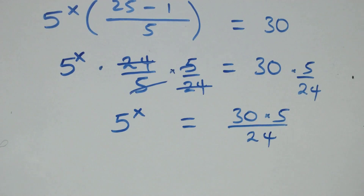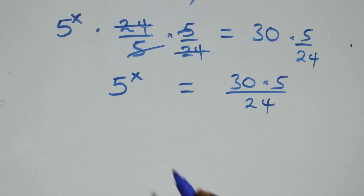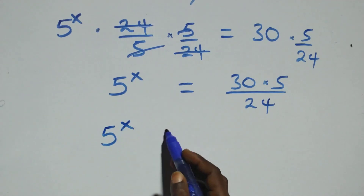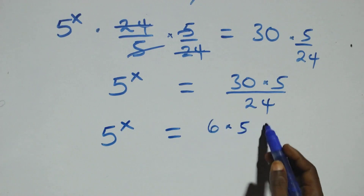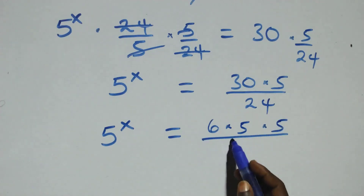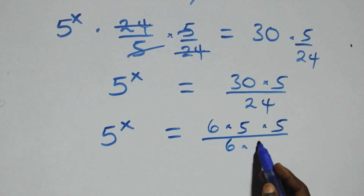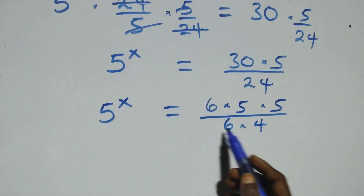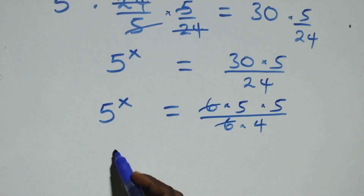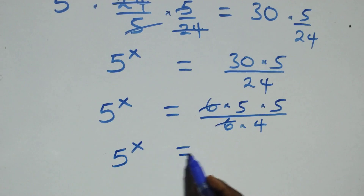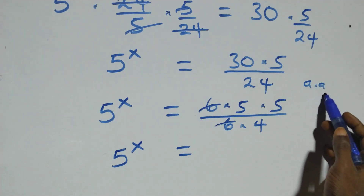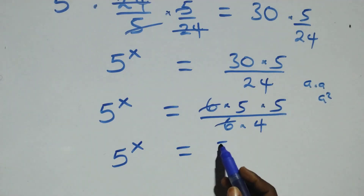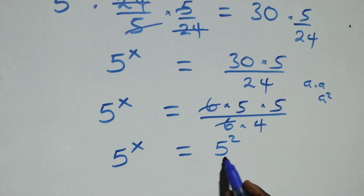Which implies we can rewrite this: 5 raised to power x equals to 6 times 5 over 6 times 4. The 6s cancel each other, and we have 5 raised to power x equals to 5 times 5, which is 5 squared, that is 25 over 4.